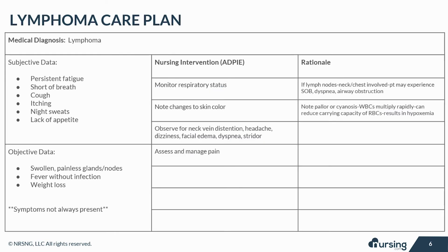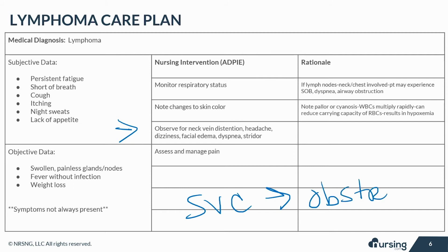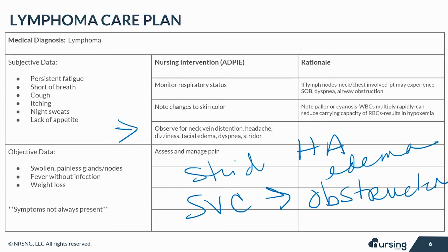Lymphoma patients are at a higher risk for vena cava syndrome, in which the superior vena cava is obstructed from enlarged lymph nodes. Observe for neck vein distension, headache, dizziness, facial edema, dyspnea, and stridor. This constitutes a life-threatening emergency, and the provider should be notified immediately.